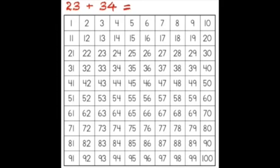This is how I solve 23 plus 34 using a 100s chart. The first thing I have to do is find my first number, which is 23. I know that there are 3 tens in 34, so I have to add my 3 tens first.